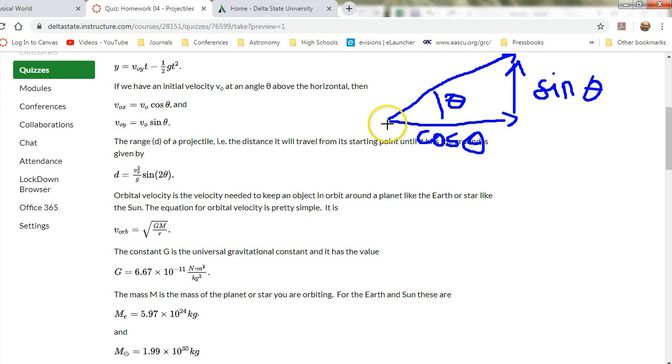So V naught, if this is V naught, then this is V naught cosine theta, and this is V naught sine theta. Those are the two components, or two legs of the triangle, that make up the velocity vector V naught at the angle theta.